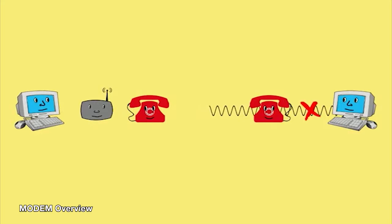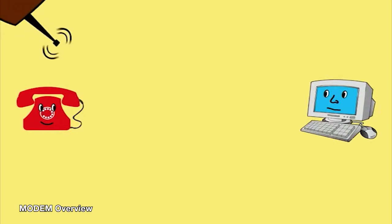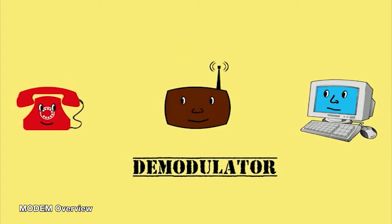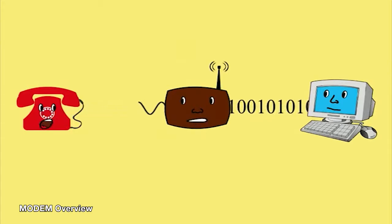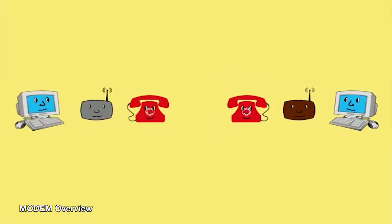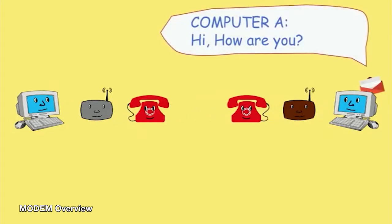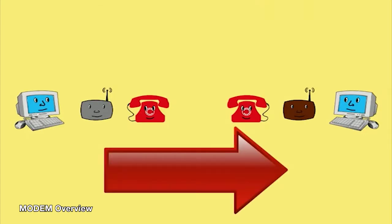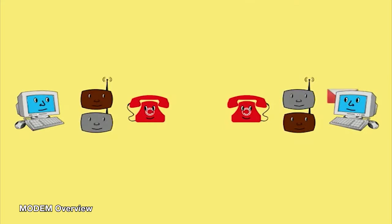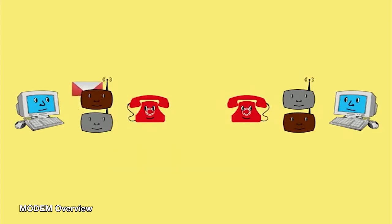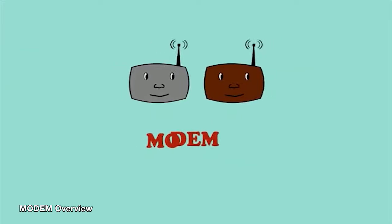And the next problem lies here. We require another kind of black box to demodulate the analog signals to binary language — a demodulator. Now the message can be successfully sent from computer A to computer B, but it's just a one-way communication. We cannot get the reply. In order to get the reply, we have to set up the whole setup from B to A: a modulator between computer B to telephone B, analog signals from telephone B to telephone A, and a demodulator between telephone A to computer A. As time passes, the modulator and demodulator combine together to form a single box named modem.